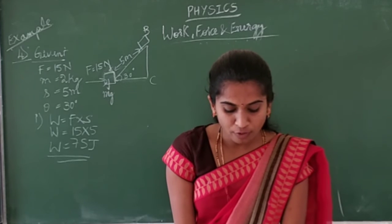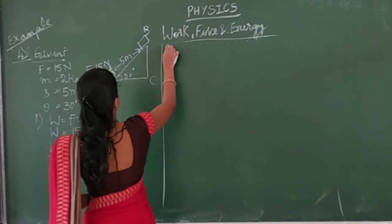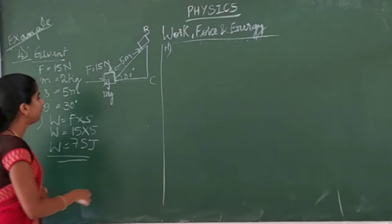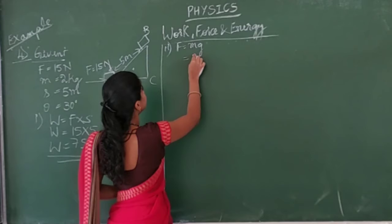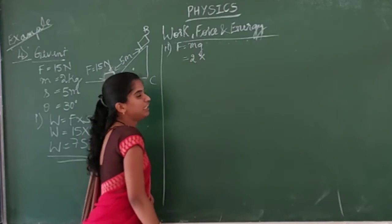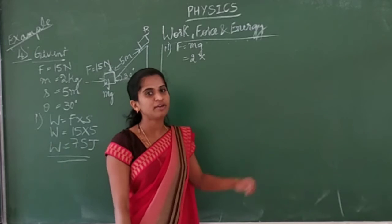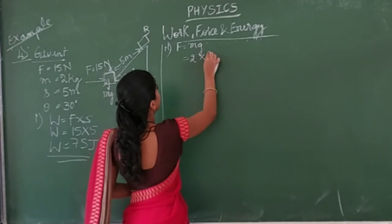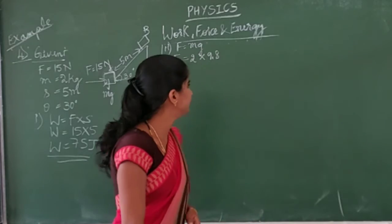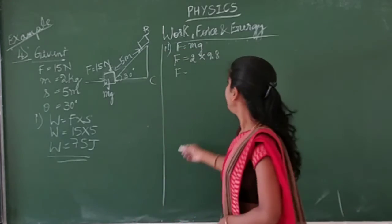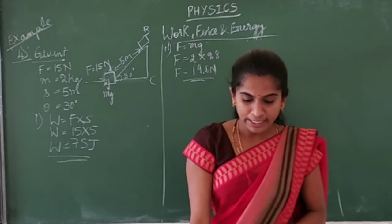The second question is the force due to gravity on the body. We know force equals mass into gravity. The mass is 2 kg, and the value of g is taken as 9.8 meters per second squared in this problem. So the force due to gravity on the body is 2 into 9.8, which equals 19.6 Newtons.